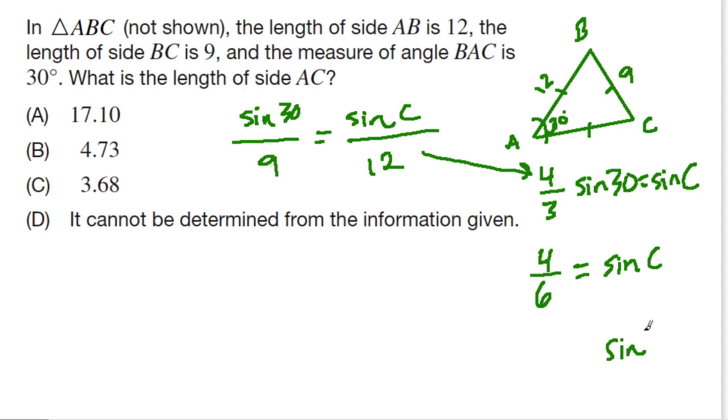Take the arc sine of C, and what do we get there? Well, this is again just 2 thirds. 4 sixths is 2 thirds, and the arc sine of 2 thirds is about 41.8.